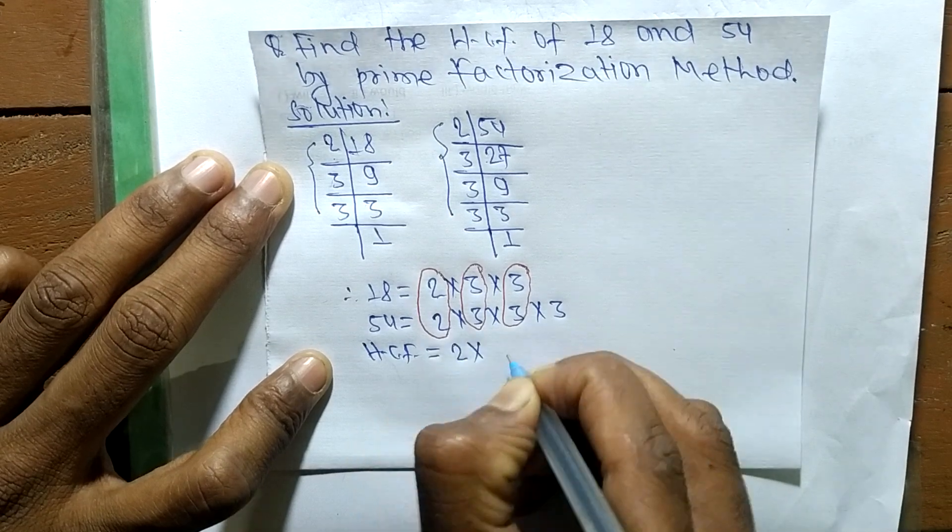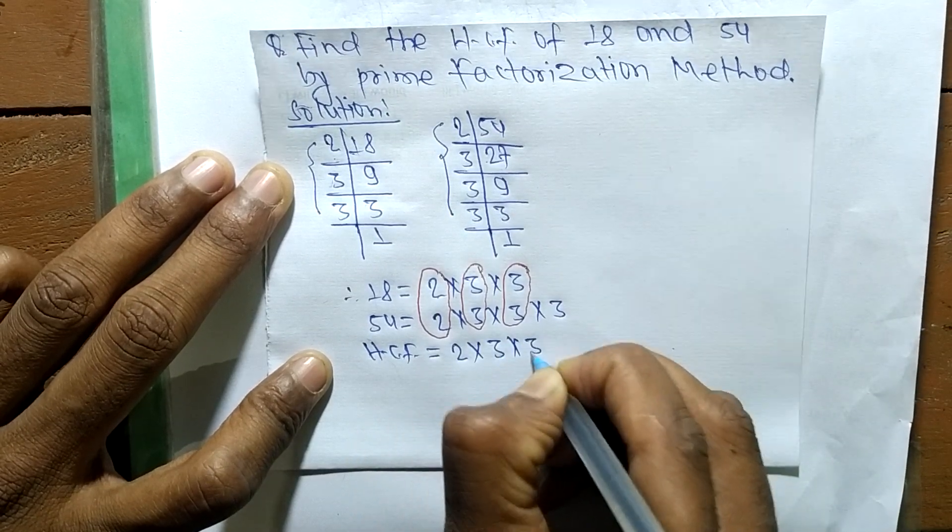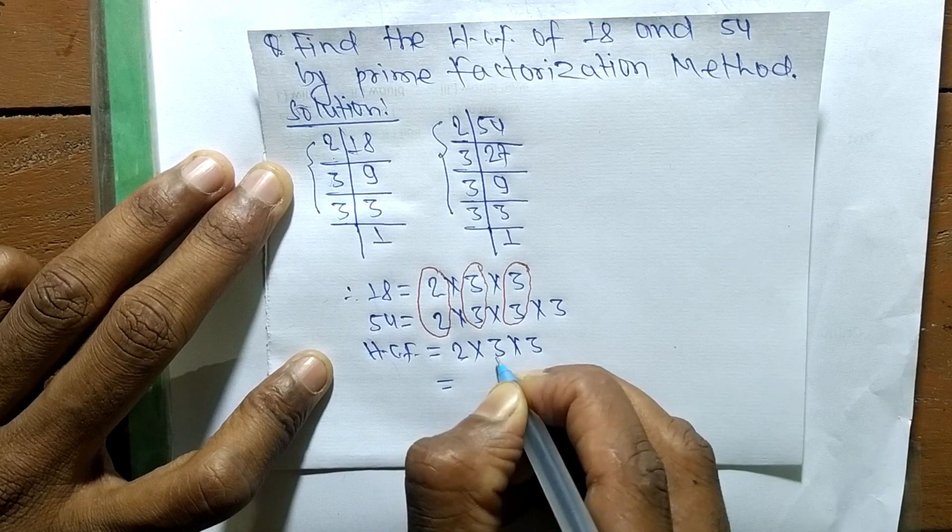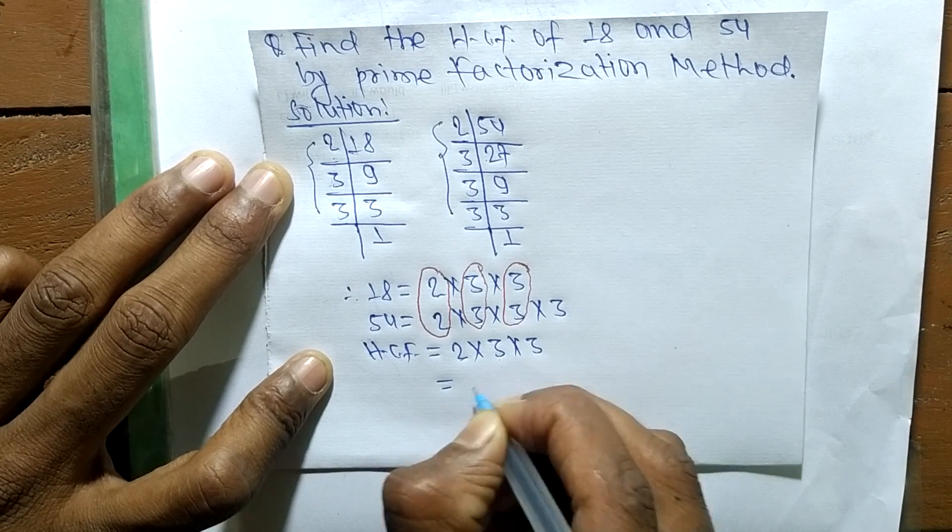they are 2 into 3 into 3. So 2 times 3 means 6 and 6 times 3 means it is